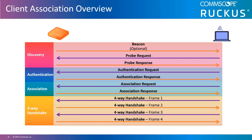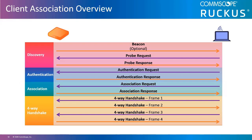The beacon frame will be covered in more detail later on in this module. The authentication process is an exchange of authentication request and response messages that essentially ensure the station and the access point support the same communication and connection abilities. The association process is also completed through request and response messages and establishes the station as a member of the basic service set.